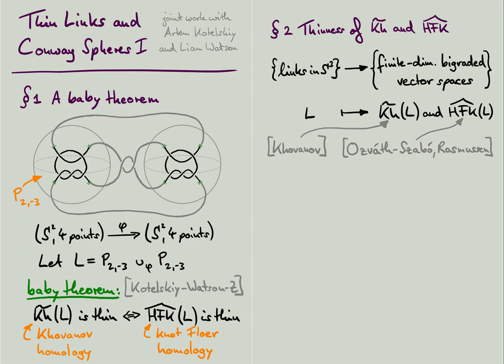Let me try to unpack this statement. Khovanov and knot-Floer homology are homology theories for knots and links. With any given knot or link L in S3, each of them associates a finite dimensional bi-graded vector space, which we denote by kh tilde of L and hfk hat of L. The original definition of Khovanov homology, about 20 years ago, goes back to Khovanov, and it is purely combinatorial.